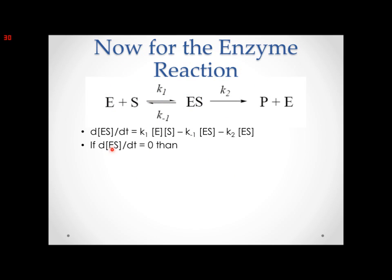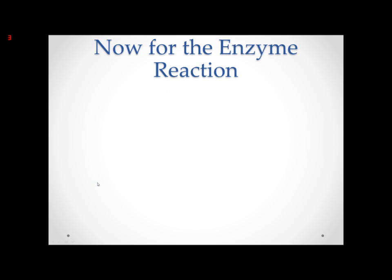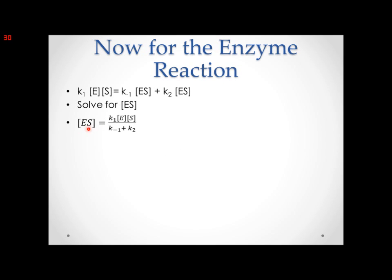Let's set d[ES]/dt to zero. If we do that, we get zero equals K1[E][S] minus K minus 1 times [ES] minus K2 times [ES]. After rearranging and solving for the concentration of ES, we get an expression with these three rate constants. Michaelis-Menten replaced these three constants with a single constant: Km equals K minus 1 plus K2 over K1. Substituting that in, the concentration of ES equals the concentration of E times the concentration of S over Km.